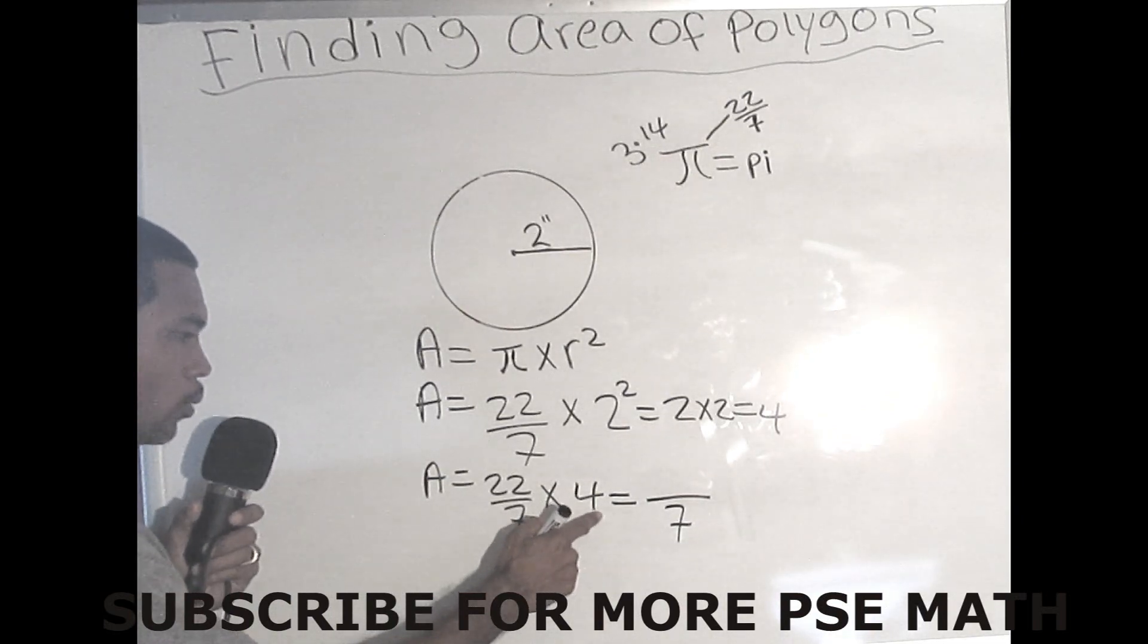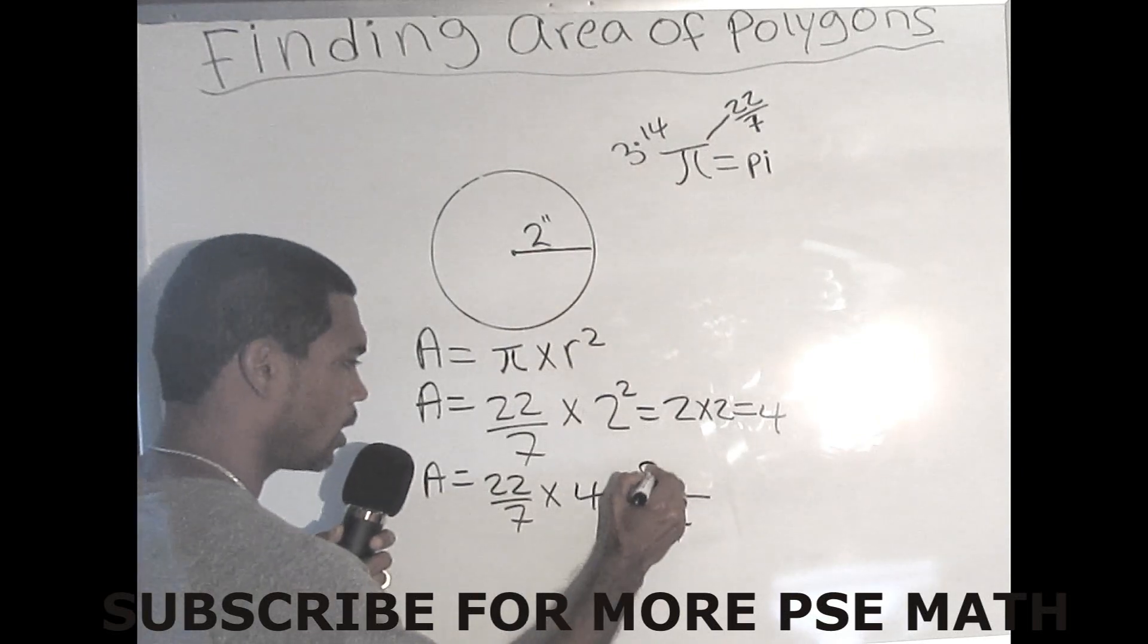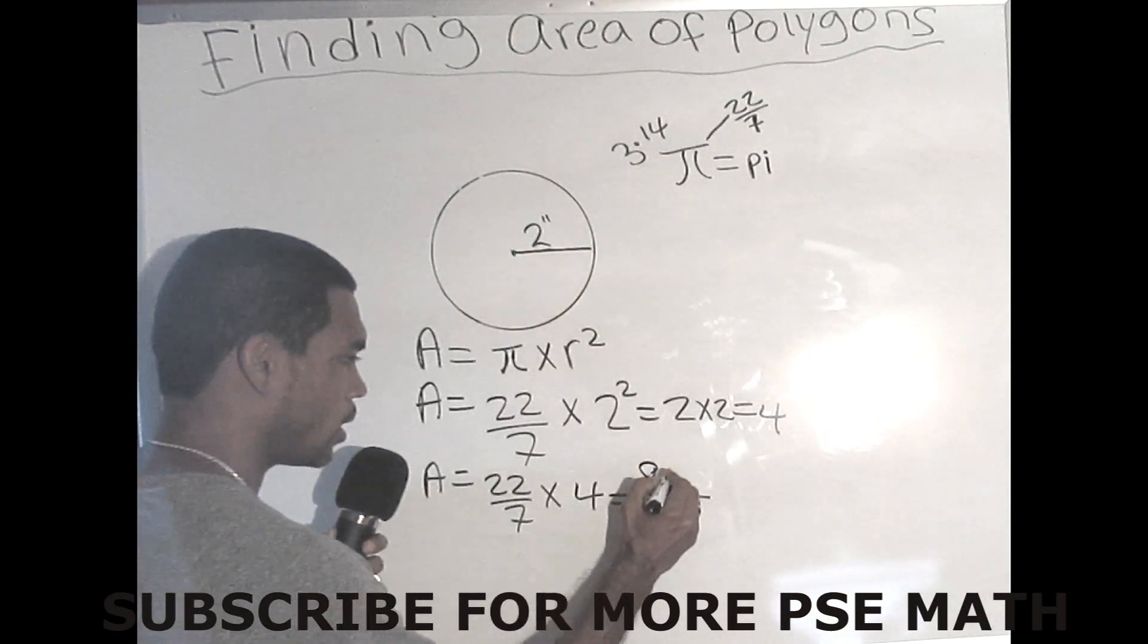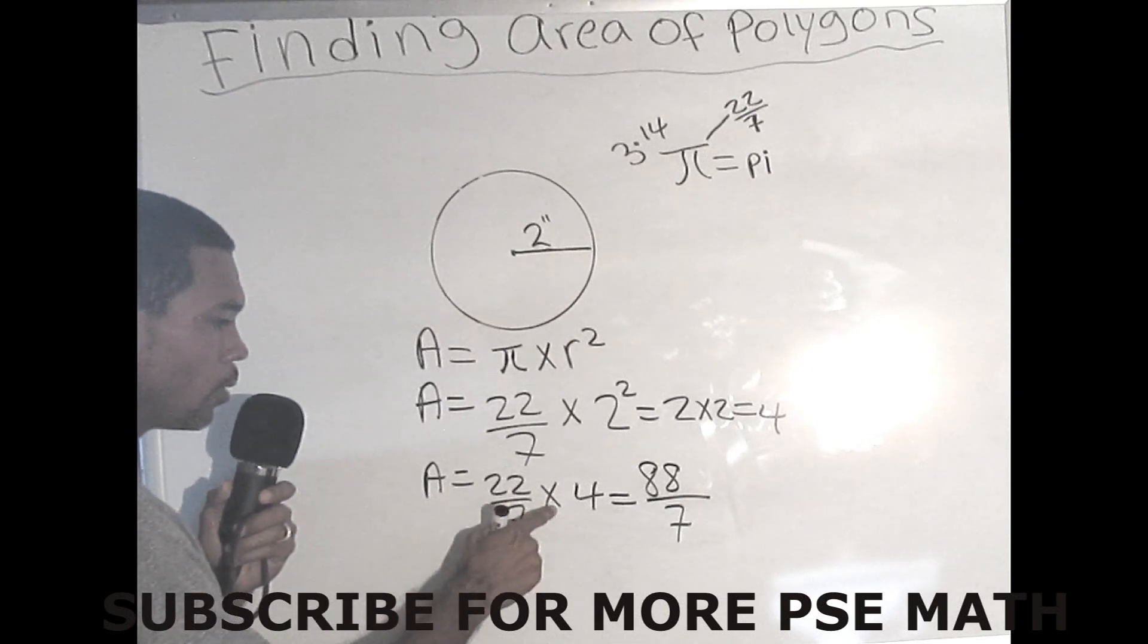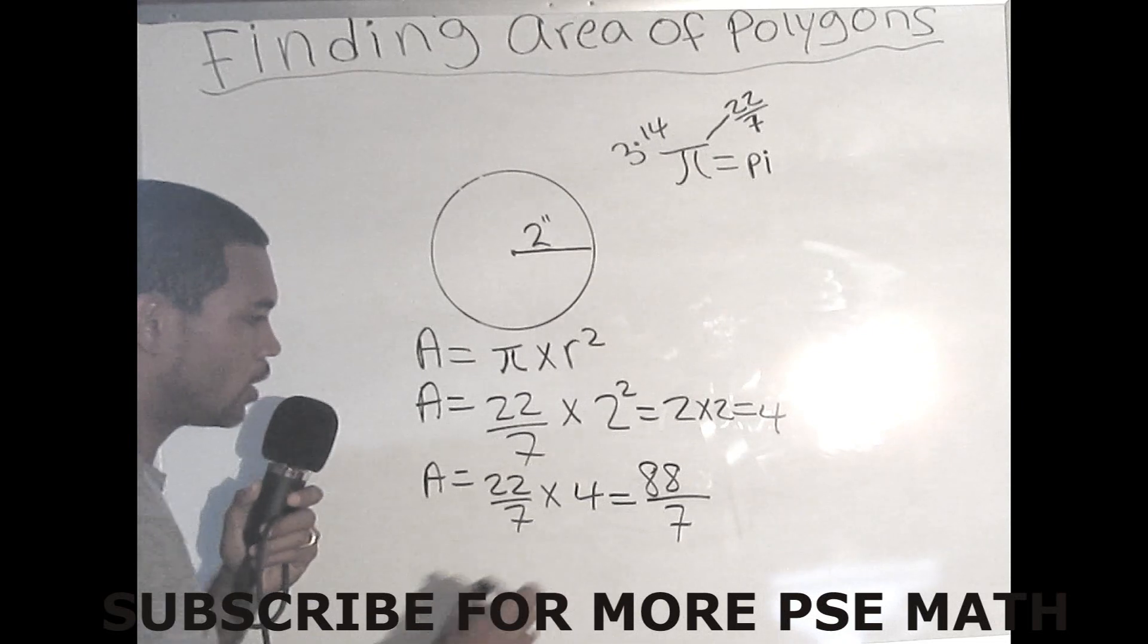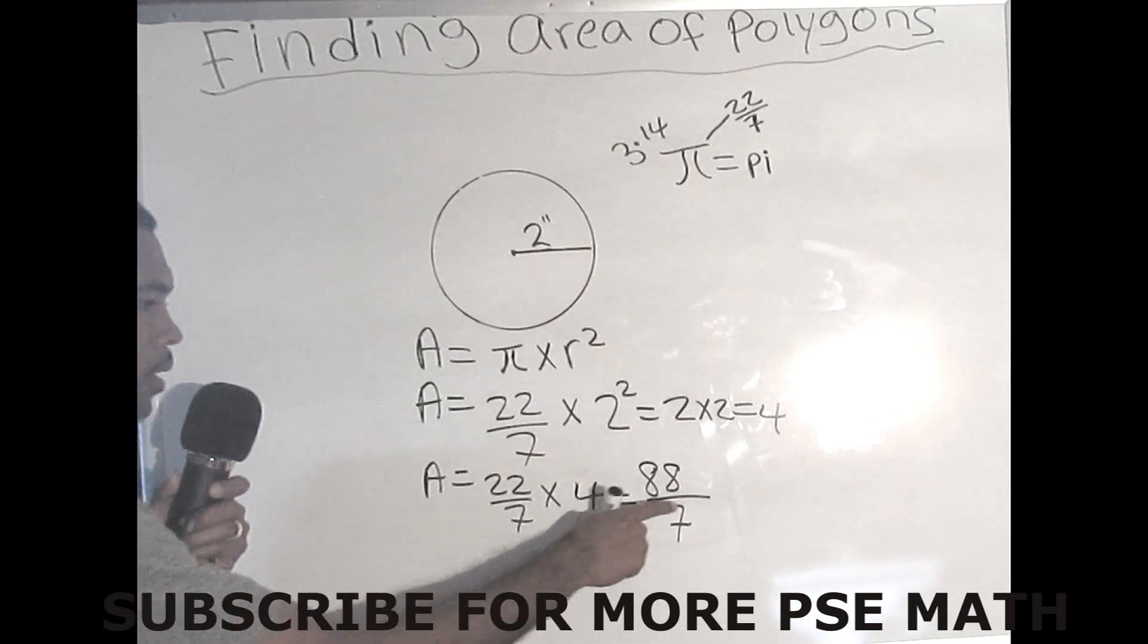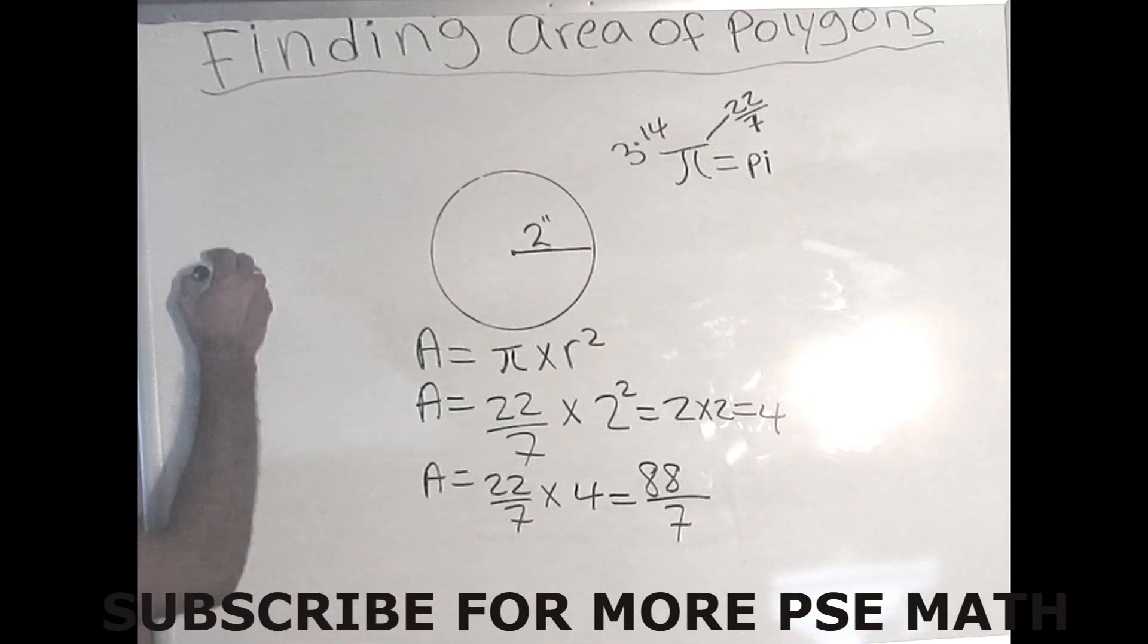And that's how we'll get our answer. And if we multiply, we know that 2 times 4 is 8, and 2 times 4 is 8. So how do we get this 88? Because 22 times 4 equals to 88 over 7. So we need to divide 88 into 7, and we're going to get our answer. So let's do that.